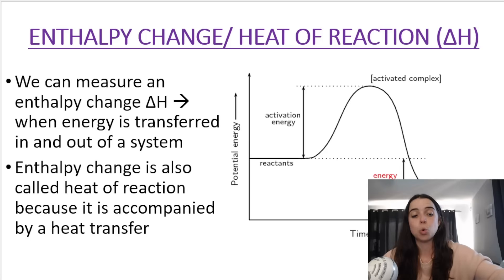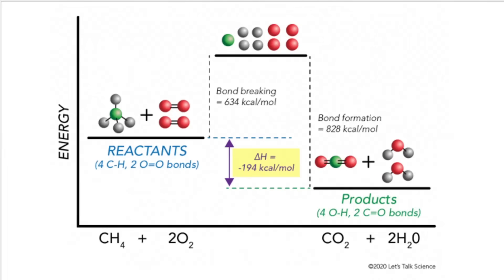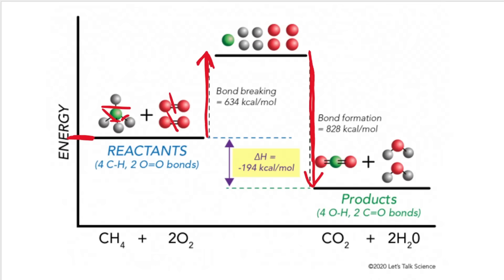It's called heat of reaction because energy change or enthalpy change is often accompanied by a change in heat — heat being released or heat being absorbed. This is an example of what can happen in a chemical reaction. The reactants have a specific energy or enthalpy associated with them. When we want the reaction to take place, we need to break these bonds in the reactants — we take in energy.